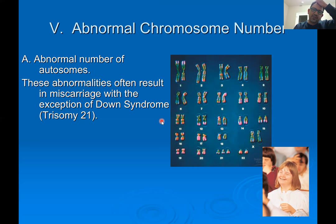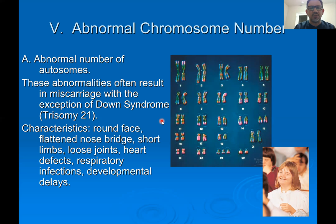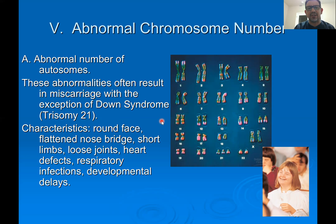You may be familiar with some of the characteristics of a person with Down syndrome, or trisomy 21. Textbooks often include features like having a round face, a flattened nose bridge, short limbs, loose joints, heart defects usually with the valves, susceptibility to respiratory infections, even susceptibility to leukemia, and developmental delays.